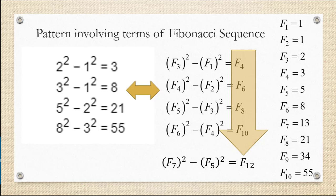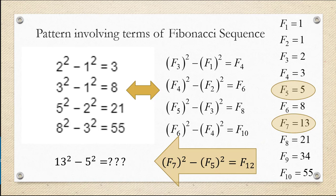And now we can just replace each symbol, F sub 7, F sub 5, and F sub 12 with the actual value of the term of the sequence. F sub 5 and F sub 7 we have on the left, we know we're going to have 13 squared minus 5 squared, but we don't know F sub 12 yet. But that's okay, we know how to find it.